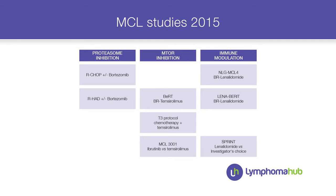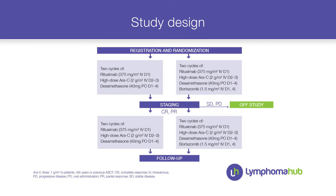There is a very interesting randomized trial with bortezomib in combination with chemotherapy, resulting in almost doubling of duration of remission, at least in first-line treatment. Our own network performed a study combining R-HAD plus or minus bortezomib. We did not choose this approach because the patient had already failed R-HAD.